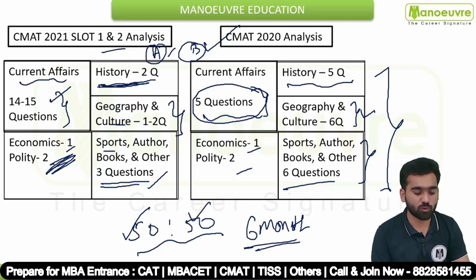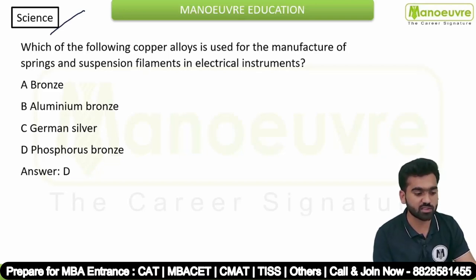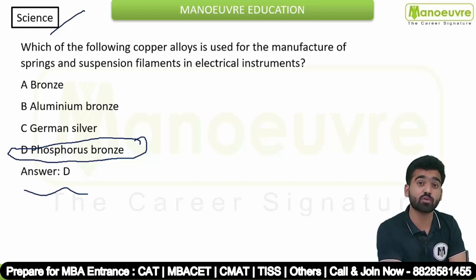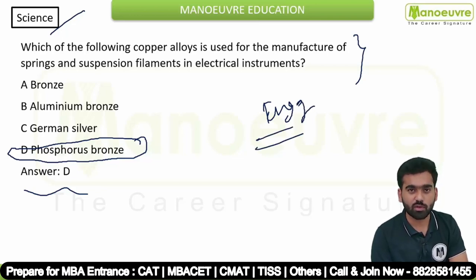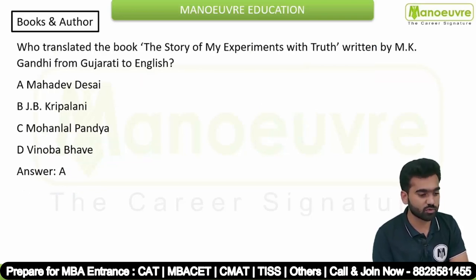The first question was related to science: 'Which of the following copper alloys is used for the manufacture of springs and suspension filaments in electrical instruments?' The answer is phosphor bronze. Such science-based questions do appear — this is essentially an engineering-level question, not a common general science question. So you may encounter engineering-based questions as well.